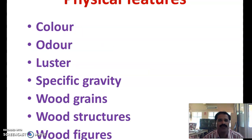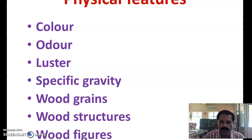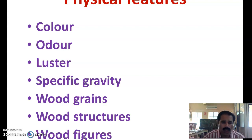Then the physical features of wood. With the help of the physical features of wood, we can easily identify the different types of wood on the basis of color, odor, luster, specific gravity, wood grains, wood structure, and wood figures.